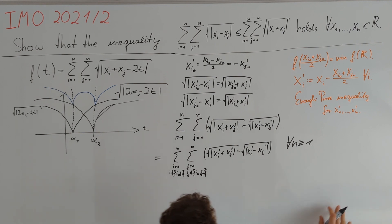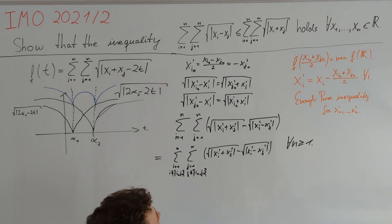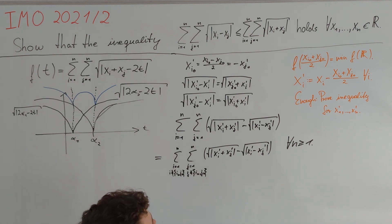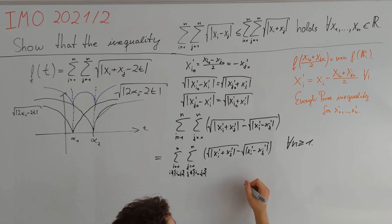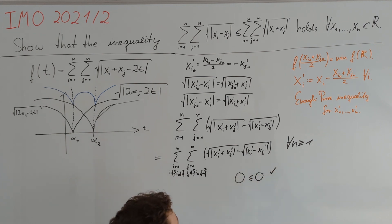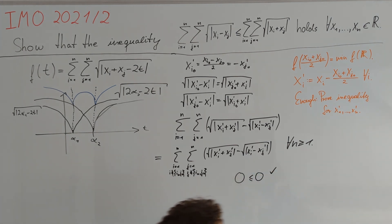The last thing to do is to check the base case n = 0, which we have not dealt with so far — but that is just a trivial case, since here we have 0 ≤ 0, which is true. Therefore we are done.